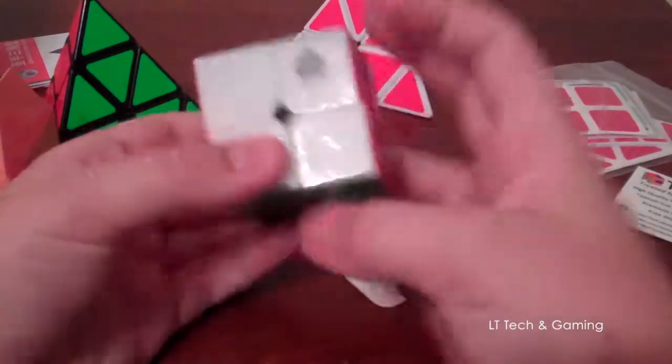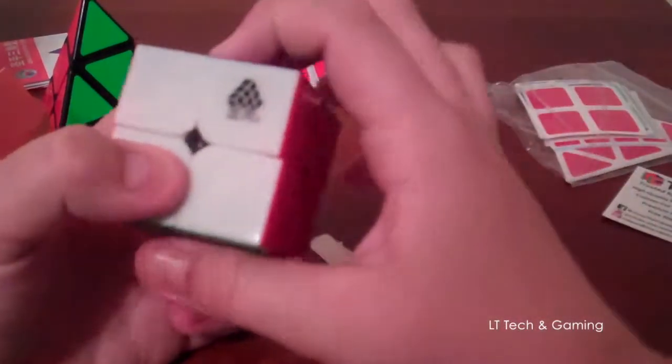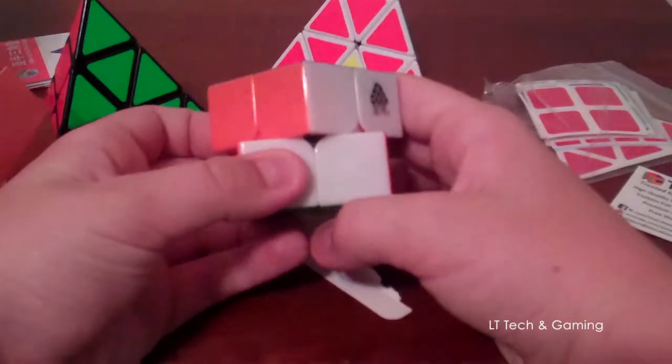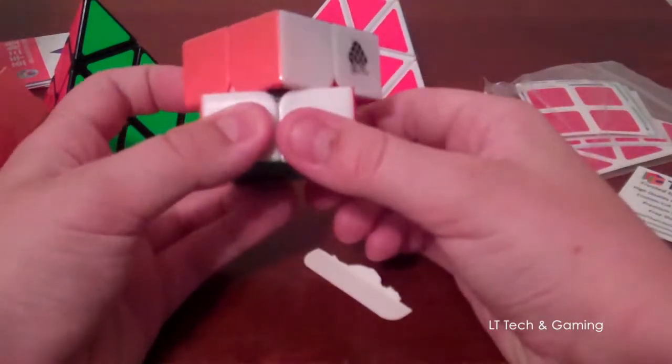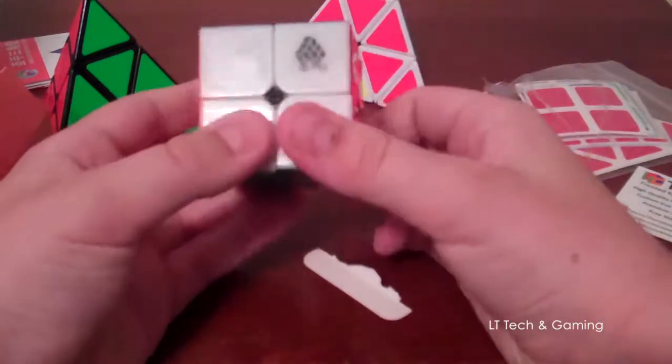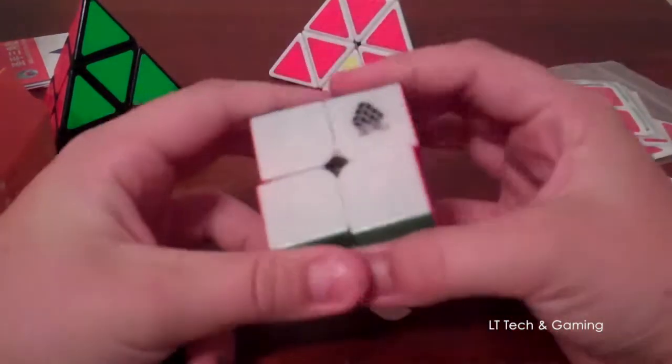So first turns. Obviously as was expected. Smooth. Very, very smooth. Corner cutting. 45 degrees. Easy. A little past that. I am going to probably lube this. It feels really scratchy, but I do like this cube a lot.